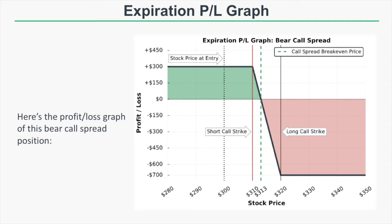If the stock price is $313 at expiration, the short 310 call will be worth $3 and the long call expires worthless. The net value of the spread is $3 — and since we sold it for a $3 credit, that leaves us with no profits or losses, not including commissions. If the stock price rises to 320, the spread will be worth $10 at expiration, which happens at or above $320.